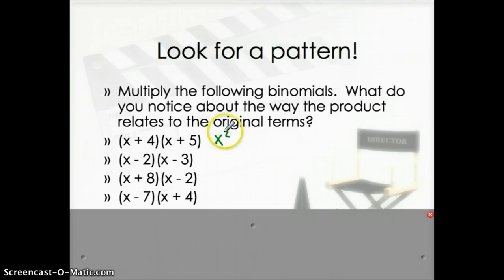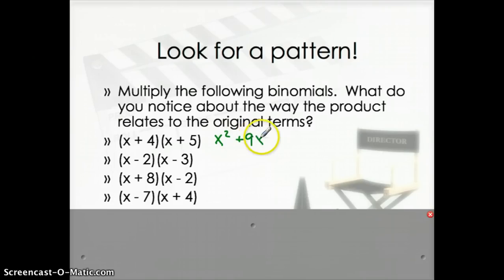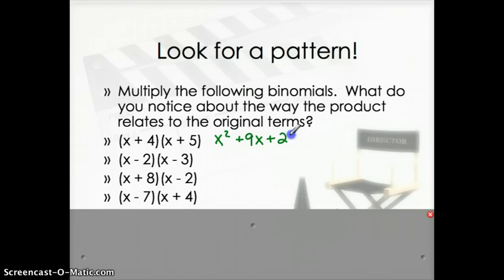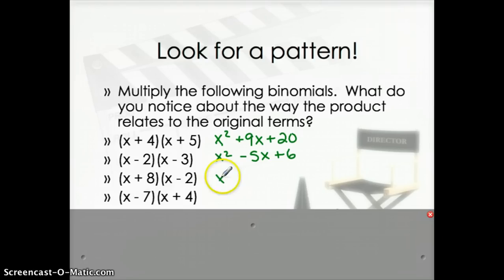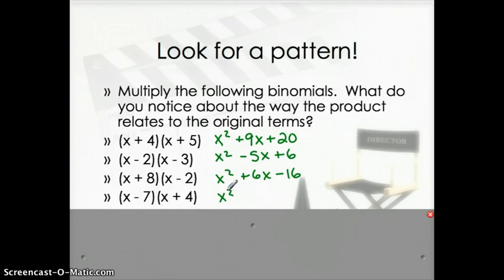So I will write down what I'm getting for my final answer, and I want to see if you notice anything. This first one I got x squared plus 9x plus 20. The next one I get x squared minus 5x plus 6. The next one I'm getting x squared plus 6x minus 16. And then the last one I'm getting x squared minus 3x minus 28.